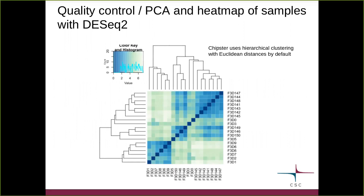Different ways to visualize our data in Chipster: if we wanted to look at some differences or similarities between individual samples, we can use a heatmap approach. A heatmap is based on looking at differences between individual samples using hierarchical clustering, and the default behavior in Chipster is to use Euclidean distances to calculate these differences between samples.